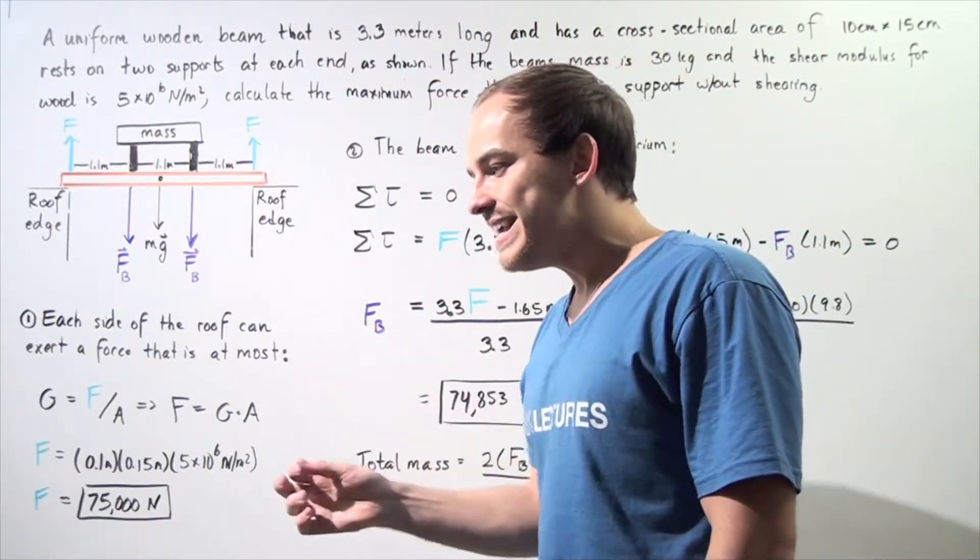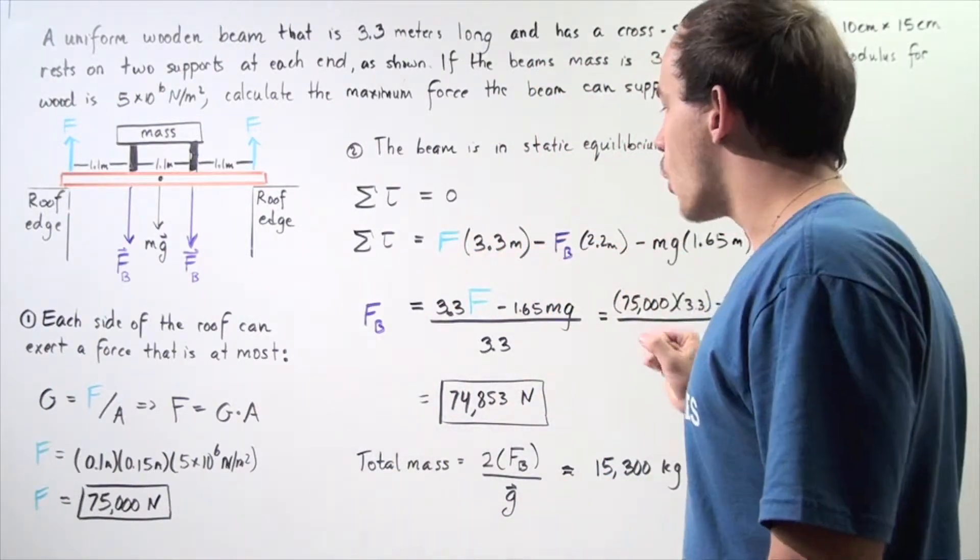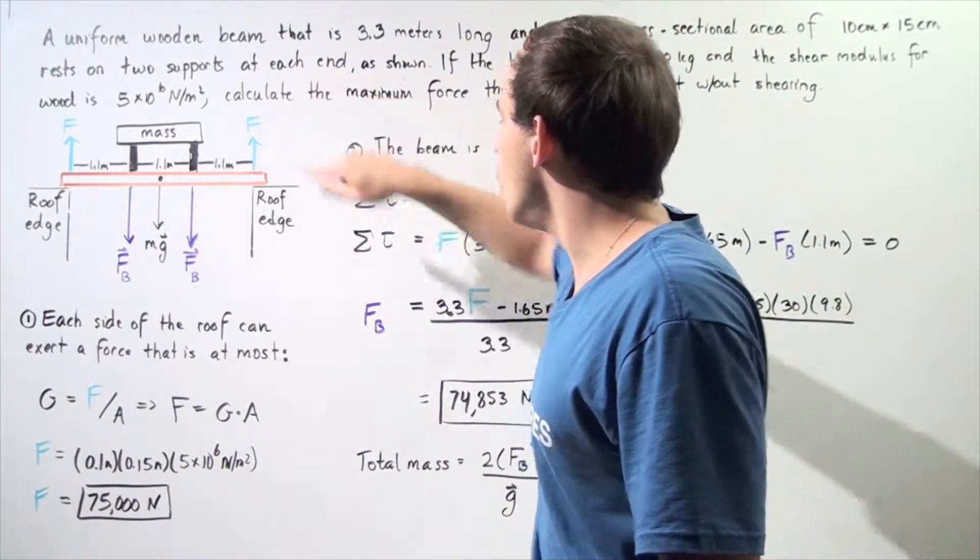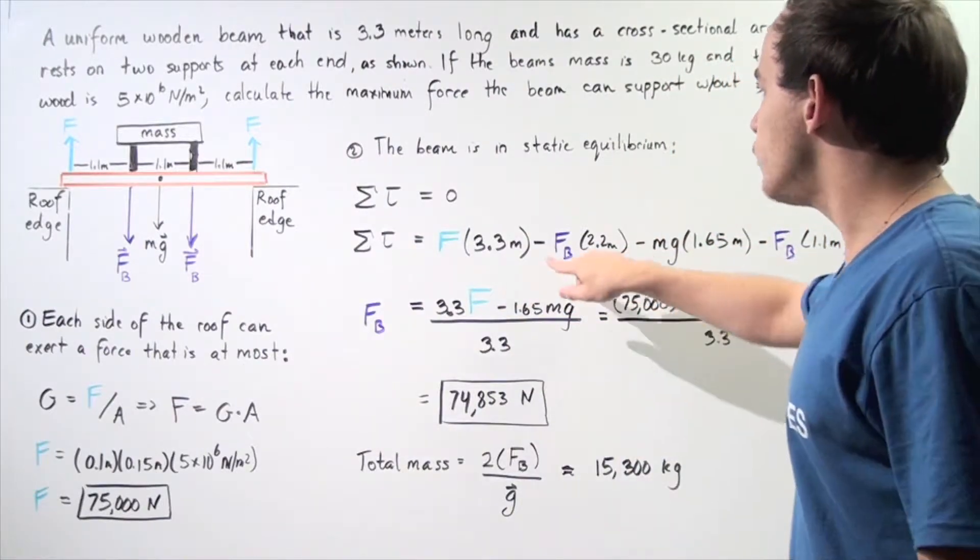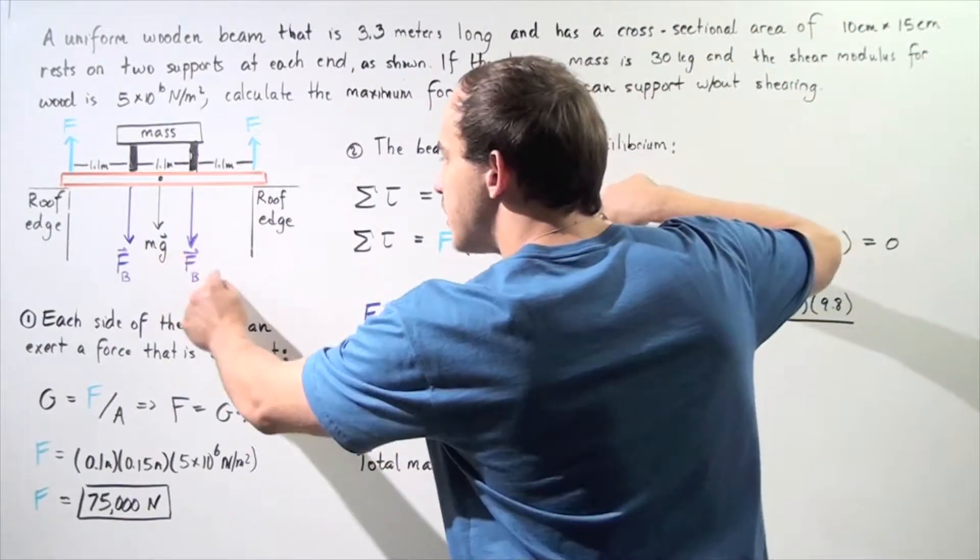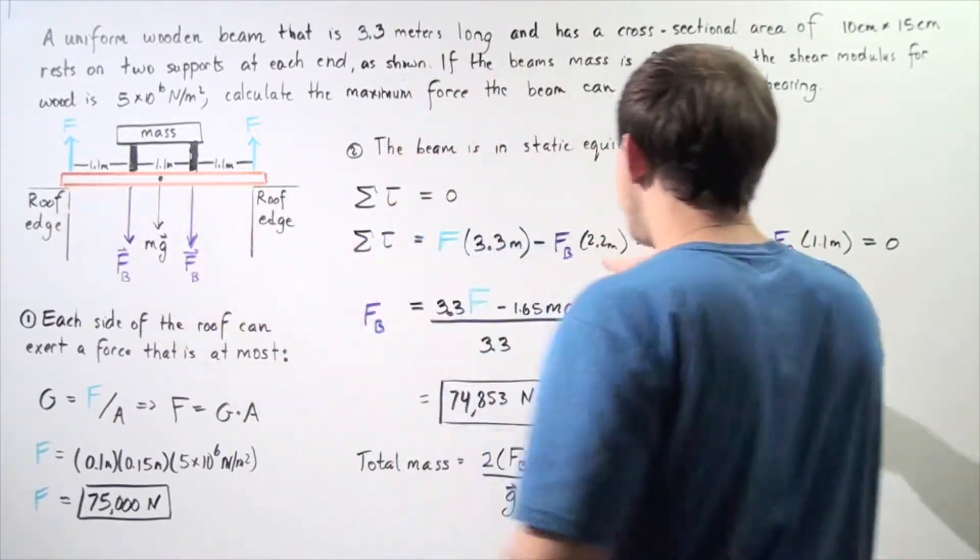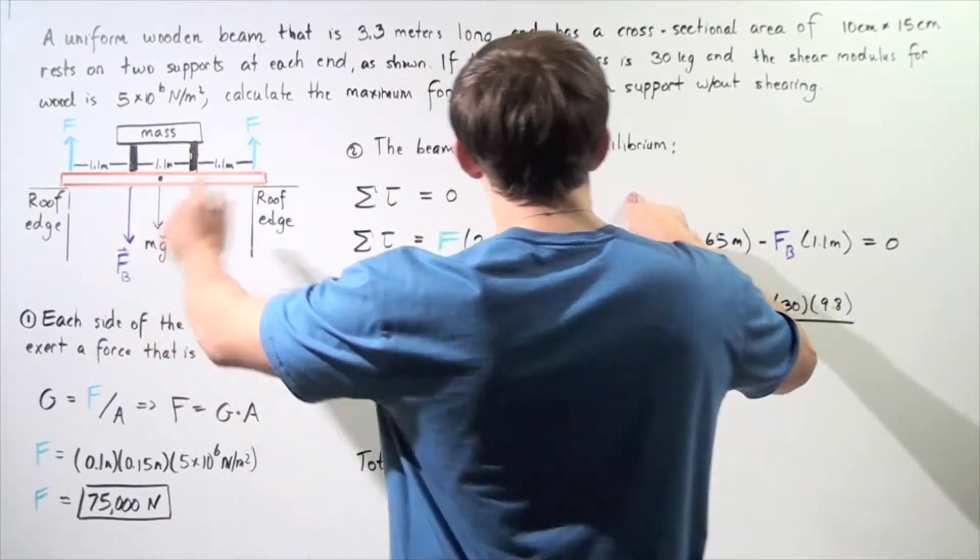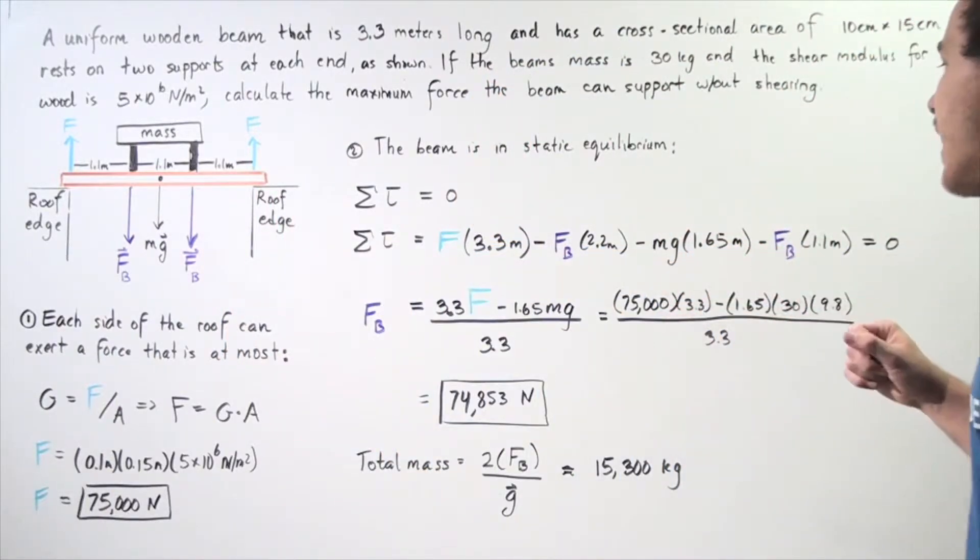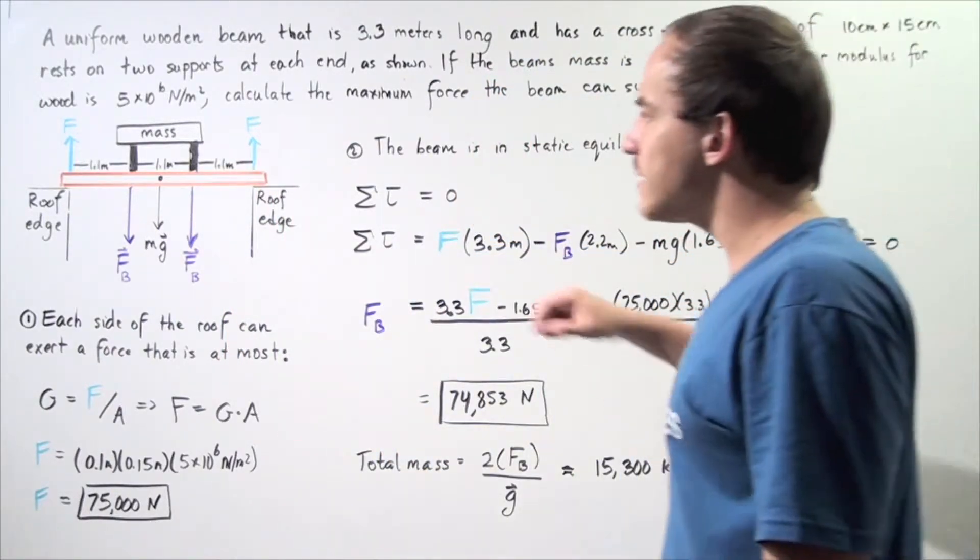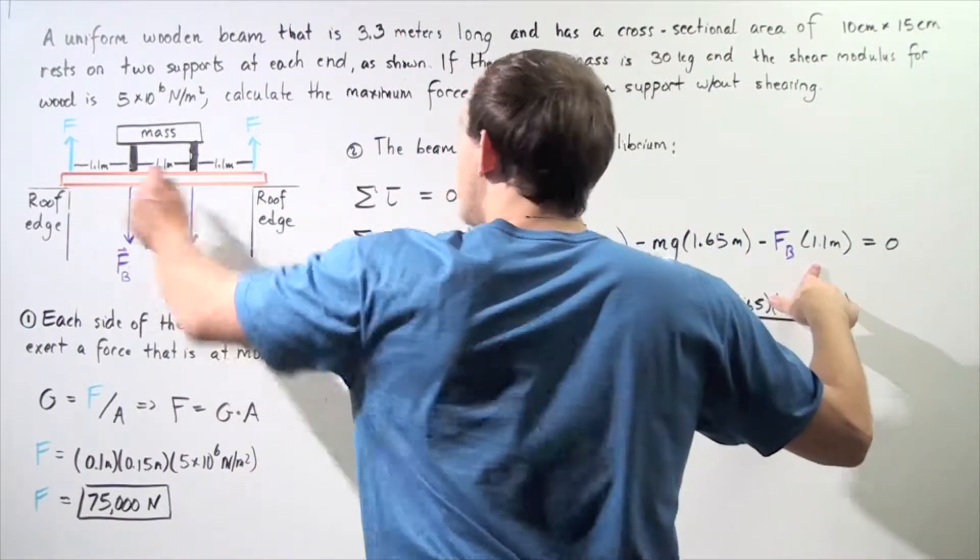So, recall that torque is equal to the force multiplied by the lever arm. So, for the first positive torque, it's force - this blue force - multiplied by the lever arm of 3.3 meters. Then, we get minus the force. So, we're looking at this force now. Force B multiplied by 2.2 meters. Next, we look at the gravitational force. Mg multiplied by half of the beam's length. So, 1.65 meters. And, finally, we look at this force, force B multiplied by 1.1 meters.